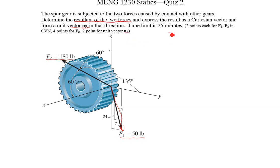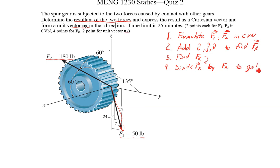Let's start off. Our approach here is step 1, we're going to formulate F1 and F2 in CVN. Step 2, add our I, J, and K components together to find FR. And then 3, find our magnitude of FR, and we'll use that to divide FR the vector by the magnitude FR to get our unit vector UR. Alright, so step 1.